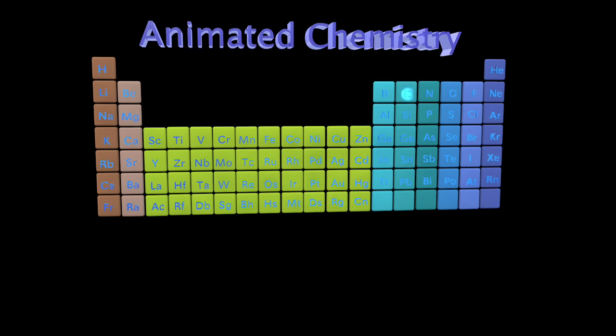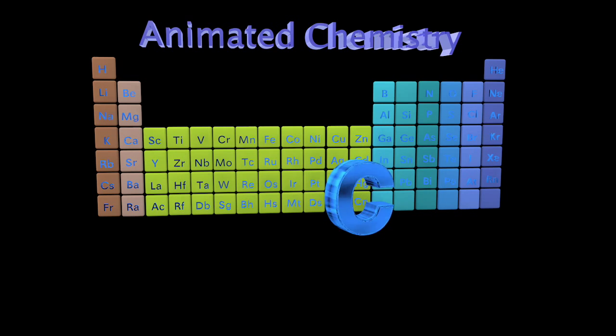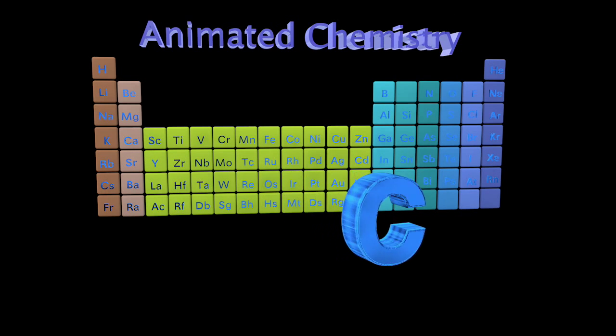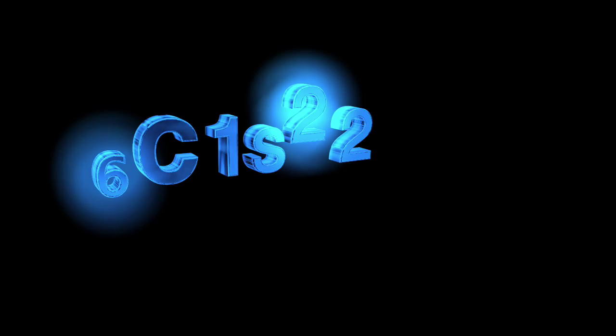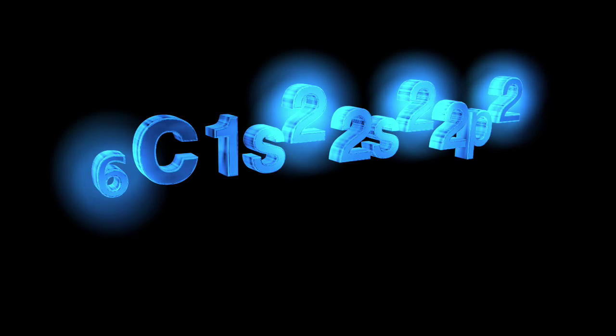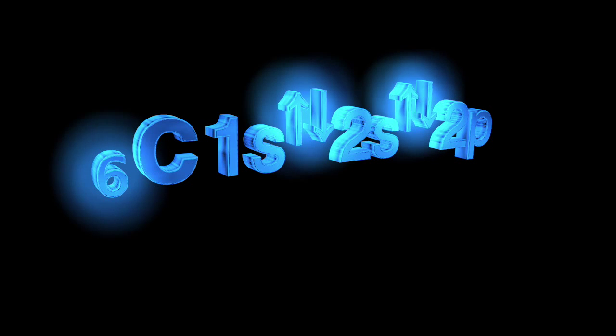To talk about hybridization in carbon, we need to remember that this element's atomic number is 6. Its electron configuration can be represented using the spin sign of the electrons.